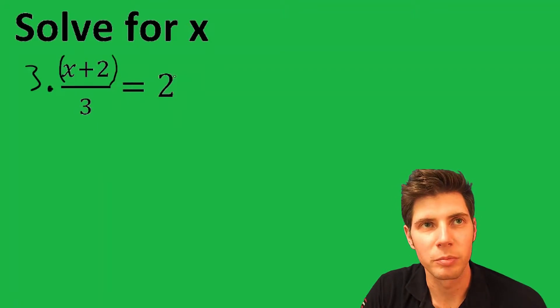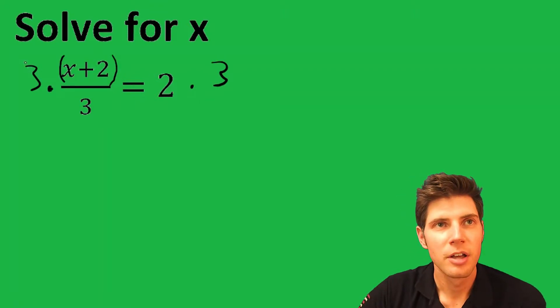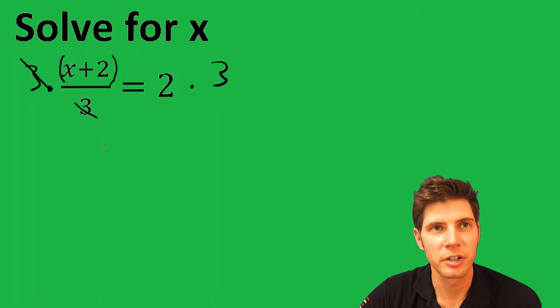So the way we're going to get rid of it is by multiplying. We're going to multiply both sides of the equation by 3. Whatever you do to one side, you have to do to the other. Well this 3 and this 3 are going to cancel.